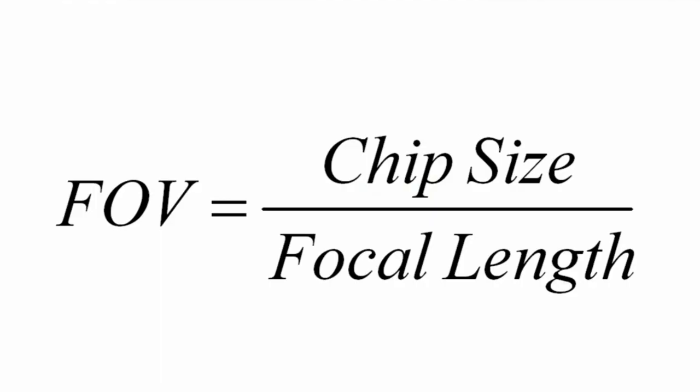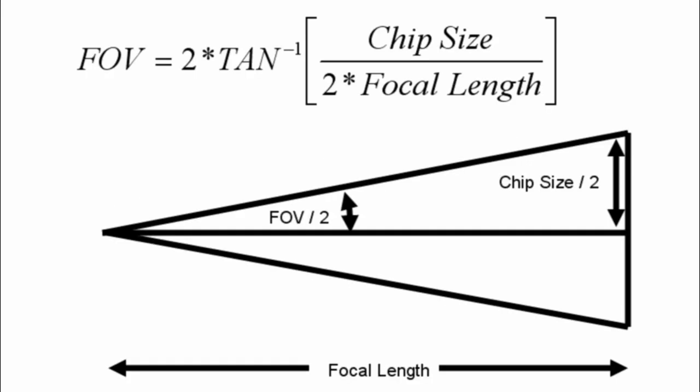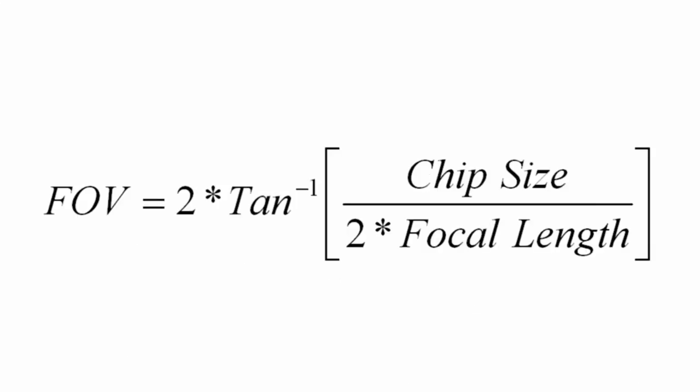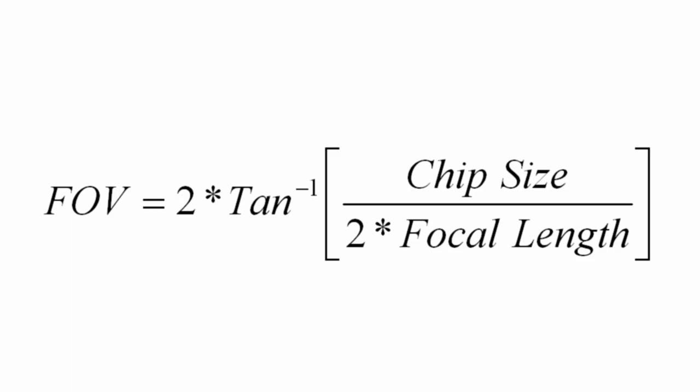Now back to our field of view formula. It may seem to you that this formula is too simple, and you're right. This is an approximation to a more complicated formula. A more precise way to calculate the field of view would be to draw a diagram like this and do some trig. The resulting formula would involve the arc tangent function. For small angles though, we can get rid of this function and the 2 in the numerator cancels out the 2 in the denominator, and we get a much simpler equation.